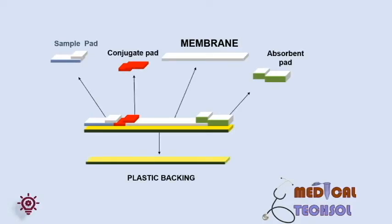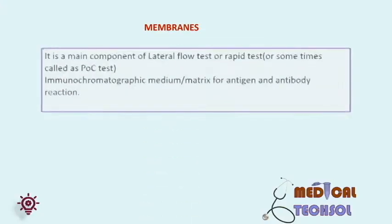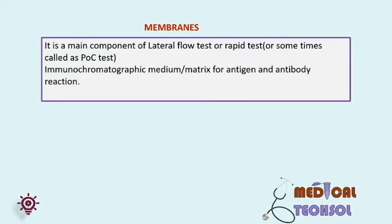The schematic diagram for the lateral flow tests is as shown in the field. In this video we will focus about membrane and plastic backing. To know about the lateral flow or other components, please click the link below in the description box. Let's move on to the membrane — one of the most important components of the lateral flow test, rapid test, or POC test. Sometimes rapid or lateral flow tests are called point-of-care tests. Membrane is an immunochromatographic medium or matrix for antigen or antibody reaction.